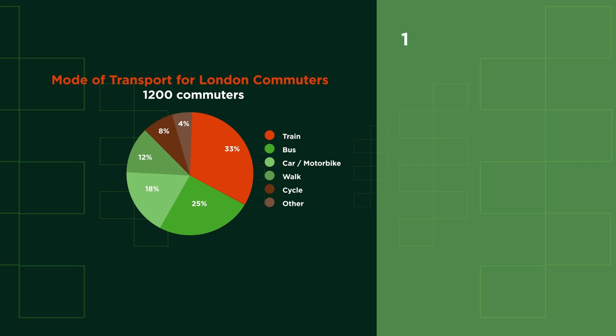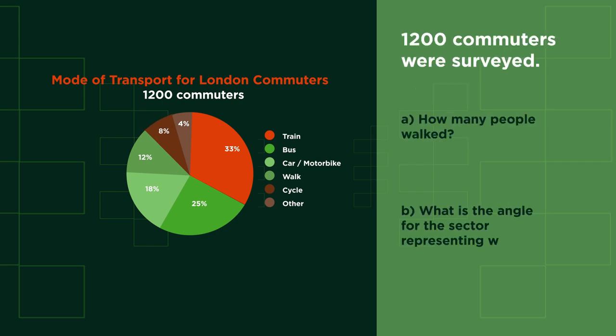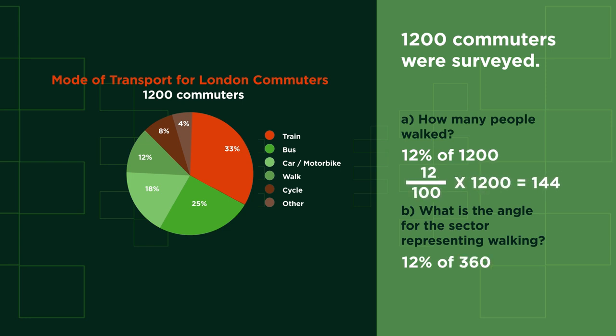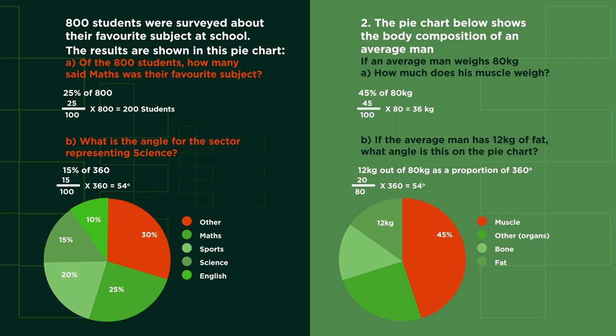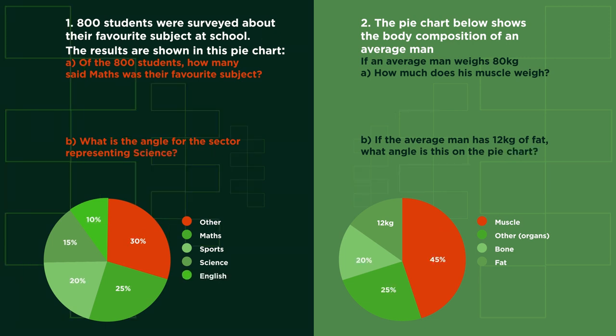Can you find how many people walked and what angle this represents? Pause the video and work it out. Did you get 144 people and 43.2 degrees? Here are some more questions for you to do. Pause the video, work them out, and click play when you're ready. How did you get on with those questions?